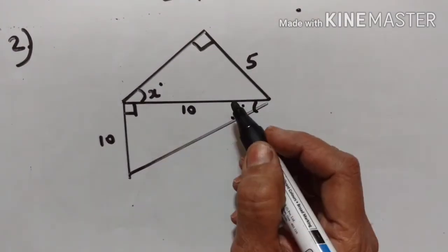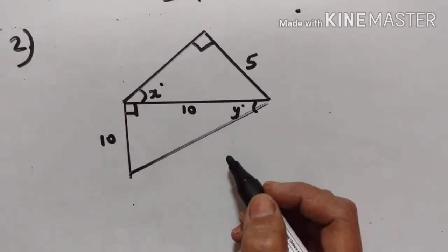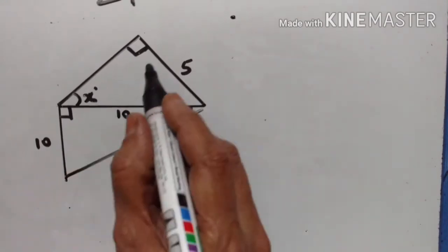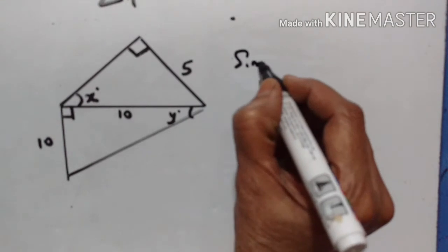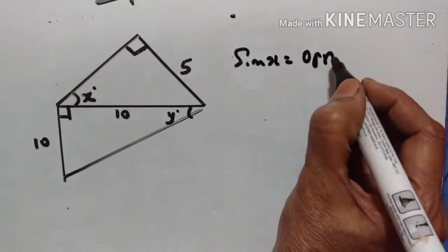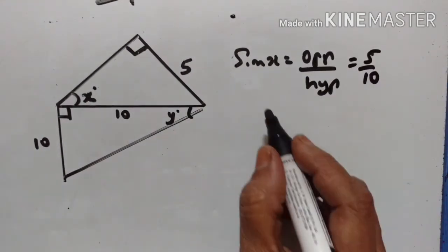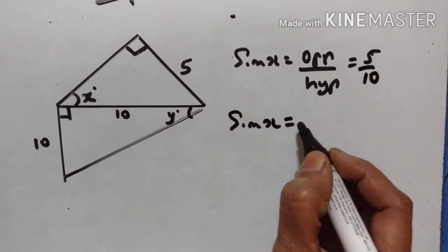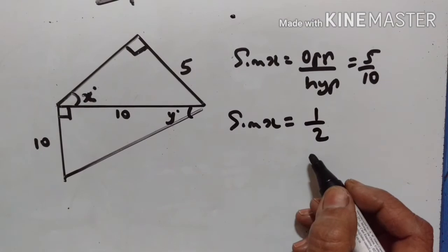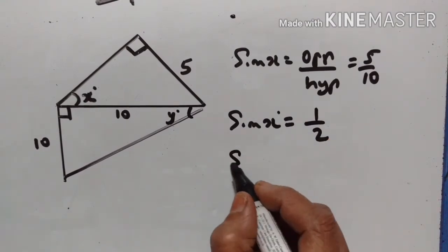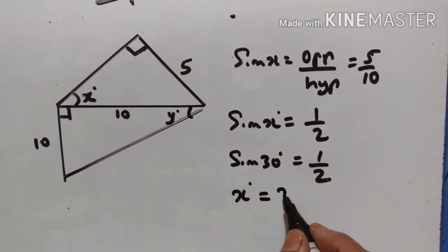Without calculating other lengths, we have to use the tables to find the angles x and y. For angle x, this is the opposite side and this is the hypotenuse, since this is the right angle. So sin x equals opposite upon hypotenuse, which is 5 upon 10, equal to half. Sin of 30° is equal to half. Therefore x is equal to 30°.